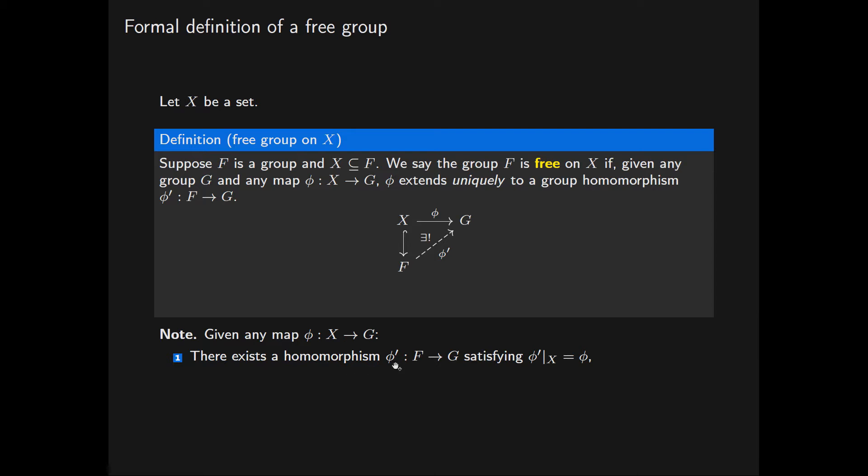One, there exists a homomorphism phi prime from F into G such that when you restrict phi prime to X you get phi back. So this map extends this one.